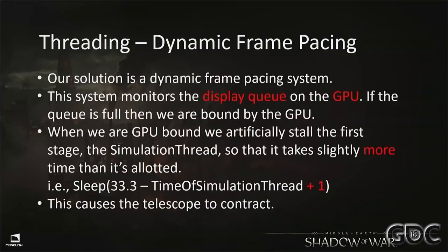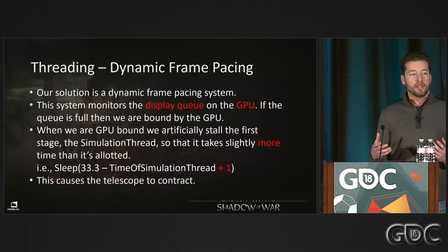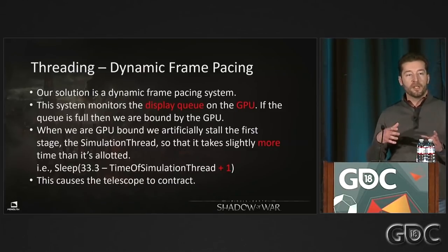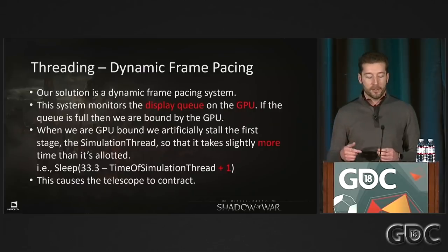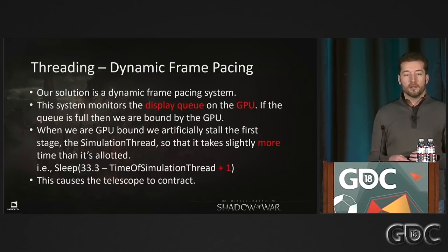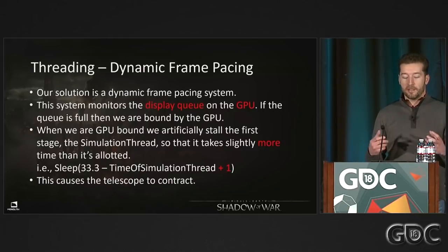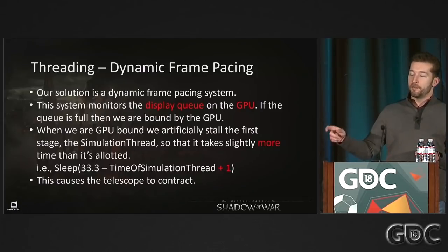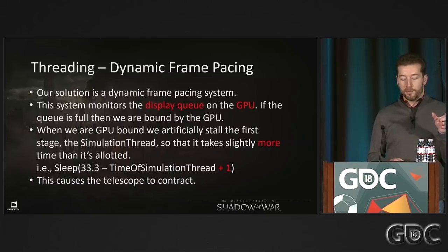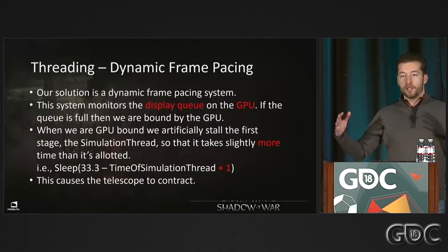To solve telescoping, we implemented a dynamic frame pacing system. On consoles you can monitor the display queue to see exactly how many frames are buffered up waiting for VBlank. We check this every frame. If there are frames buffered up, we know we're GPU bound and telescoping. We respond by going back to the simulation thread — the first pipeline stage — and making it take longer than any other stage, adding about 1ms per frame. Doing so contracts the entire telescope.